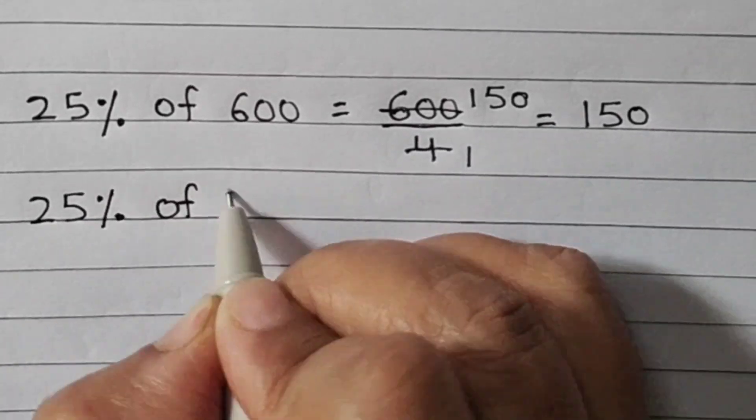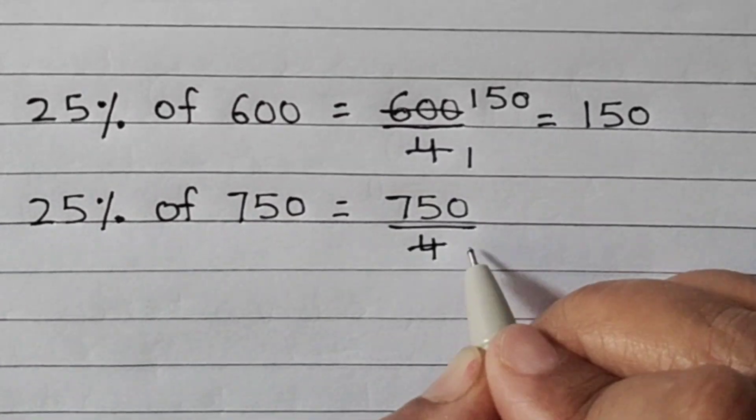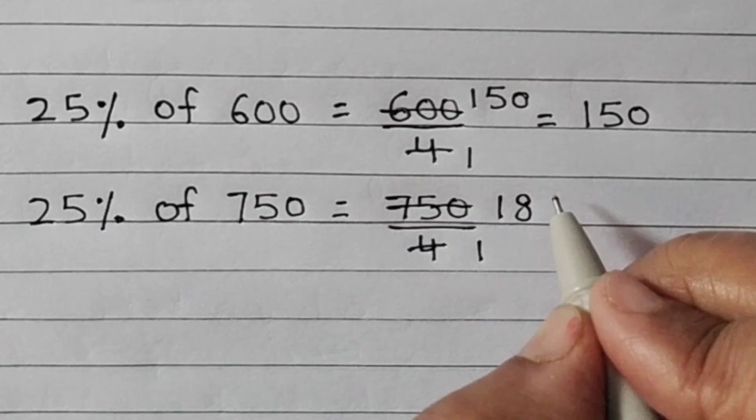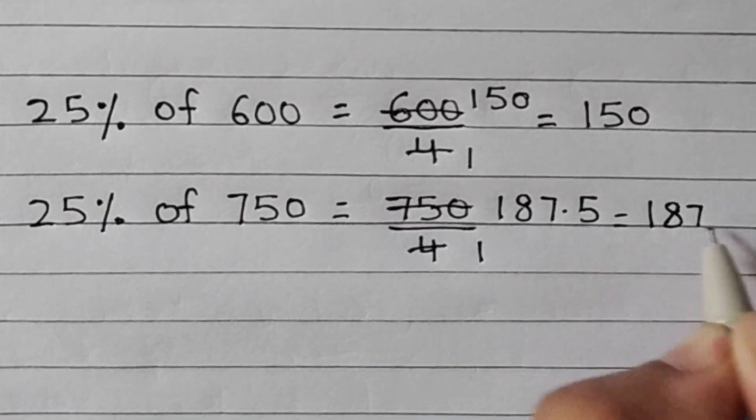25% of 750 is 750 divided by 4 which is equal to 187.5.